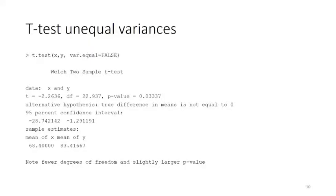Here's the unequal variances test — you specify var.equal = FALSE. It gives you what's called the Welch test, named after a professor of statistics from Leeds many years ago. Instead of having 25 degrees of freedom, we've only got 22.97 because it does an approximation — the Satterthwaite approximation. But the p-value is pretty similar. Again, it doesn't give you the point estimate of the difference, which is really annoying.